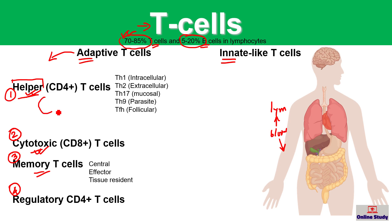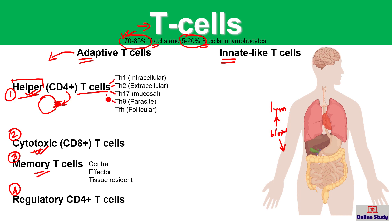Helper T cells express the CD4 protein on their surface, so they are called CD4-positive T cells. CD4 T cells, or helper T cells, can be categorized depending on their cytokine profile. They can be Th1, Th2, Th17, Th9, and follicular helper T cells.